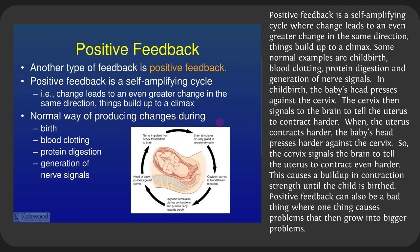Positive feedback is a self-amplifying cycle where change leads to even greater change in the same direction — things build up to a climax. Normal examples include childbirth, blood clotting, protein digestion, and generation of nerve signals. In childbirth, the baby's head presses against the cervix, which releases a signal telling the brain to release oxytocin, causing the uterus to contract harder — and the process continues to build.